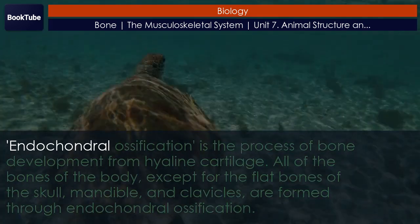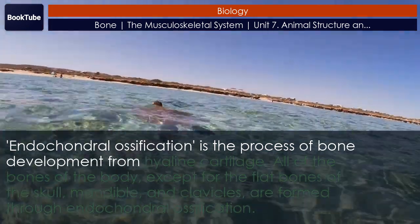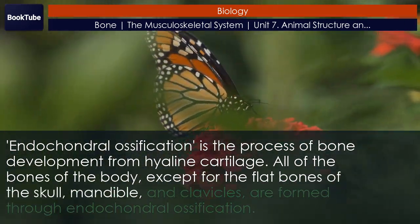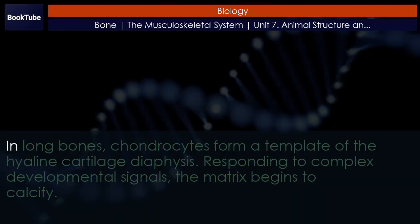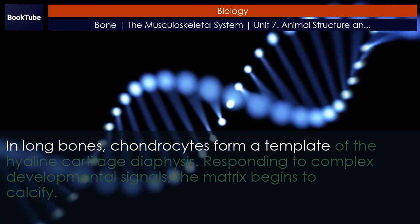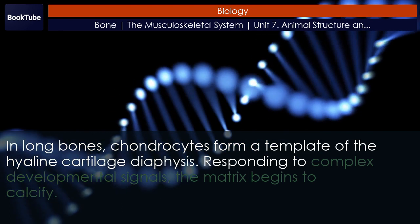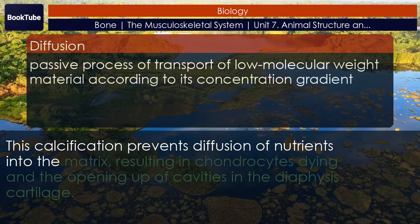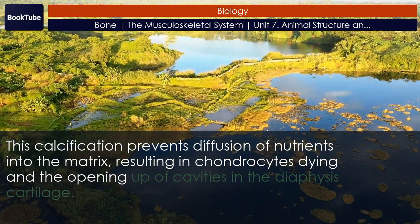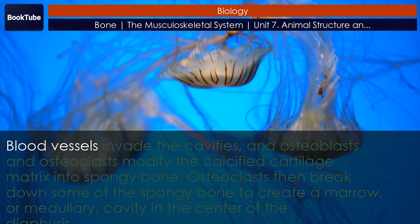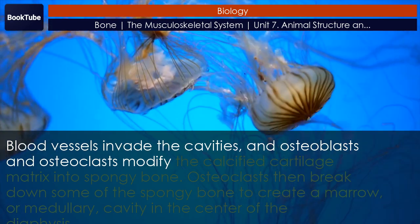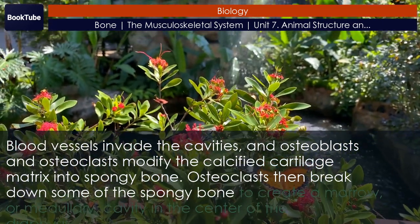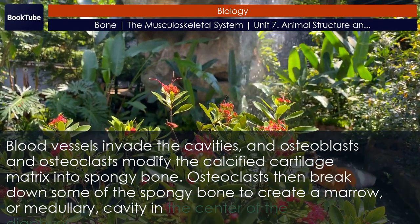Endochondral ossification is the process of bone development from hyaline cartilage. All of the bones of the body, except for the flat bones of the skull, mandible, and clavicles, are formed through endochondral ossification. In long bones, chondrocytes form a template of the hyaline cartilage diaphysis. The matrix begins to calcify, which prevents diffusion of nutrients, resulting in chondrocytes dying and opening up cavities in the diaphysis cartilage. Blood vessels invade the cavities, and osteoblasts and osteoclasts modify the calcified cartilage matrix into spongy bone. Osteoclasts then break down some of the spongy bone to create a marrow or medullary cavity in the center of the diaphysis.